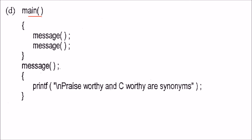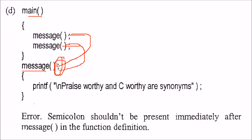We have main with two messages — first this will be called, then again this will be called. The error is a semicolon. Whenever we give a function definition, we do not put any semicolon. So the error is this semicolon here.